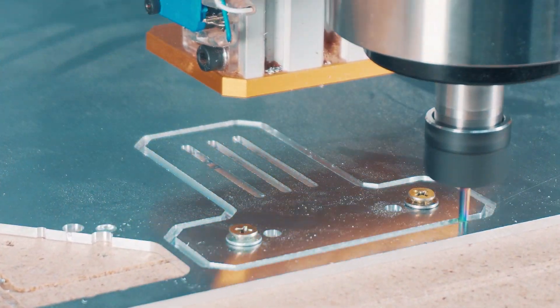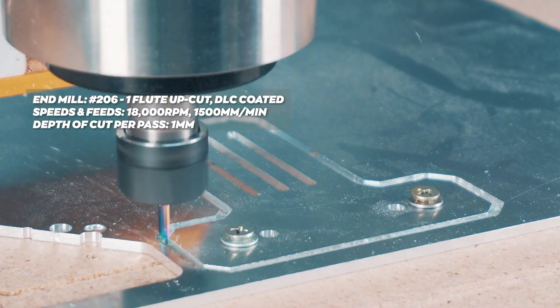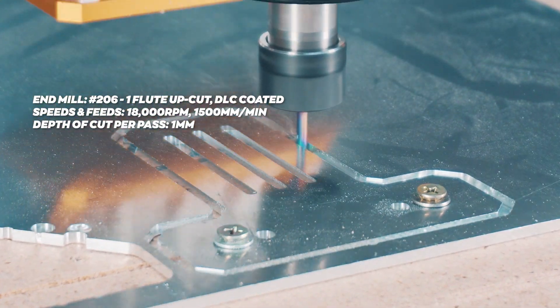We are using our one-flute upcut end mill number 206 to mill out the part. As you can see, the cut is clean and smooth.